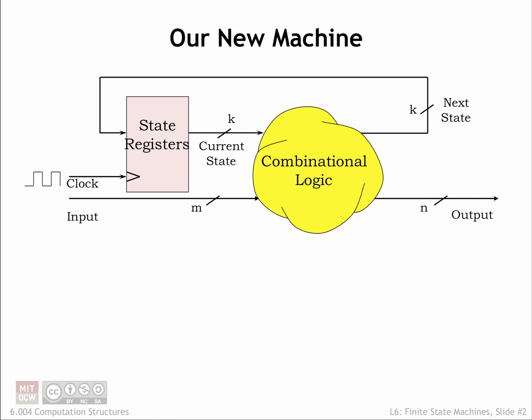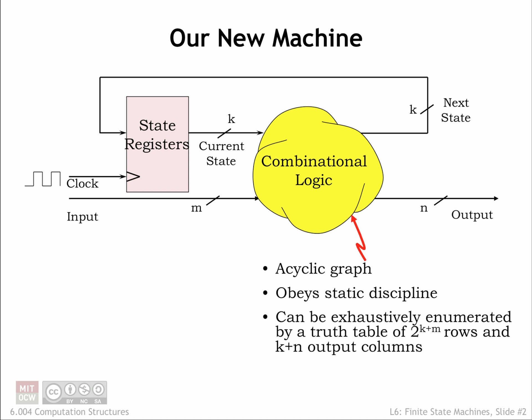In the last chapter we developed sequential logic, which contains both combinational logic and memory components. The combinational logic cloud is an acyclic graph of components that obey the static discipline. The static discipline guarantees that if we supply valid and stable inputs, then we will get valid and stable digital outputs by some specified interval after the last input transition.